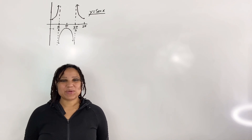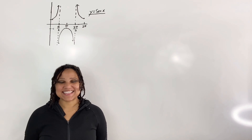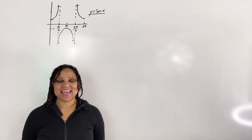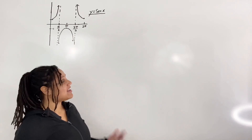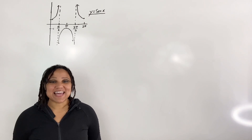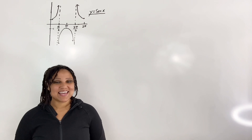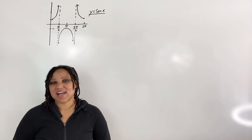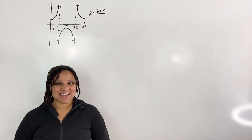In this video we are going to graph inverse secant and identify the domain and range. We begin with the original graph of secant. Secant is a function because it passes the vertical line test. This means if I draw any vertical line to the graph it will only intersect the graph one time.